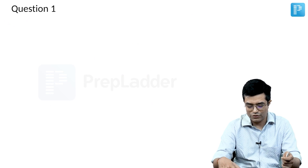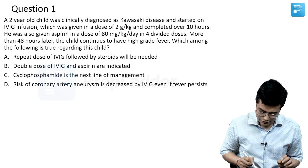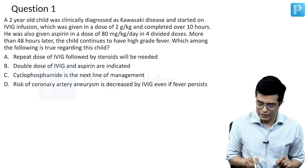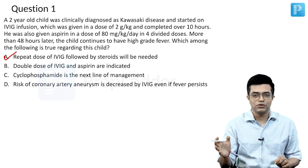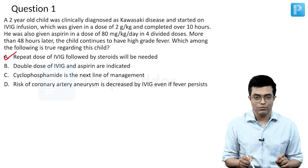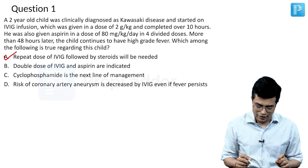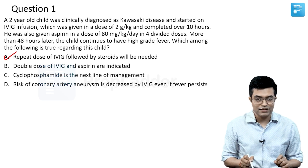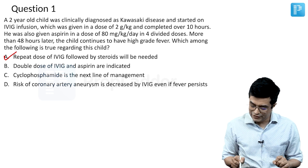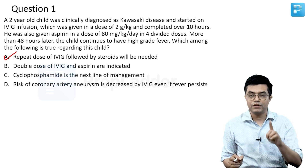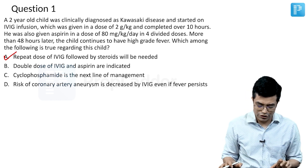Going back to the question: the answer is A — repeating the dose of IVIG followed by steroids will be needed. Option B is wrong because doubling the dose of IVIG and aspirin is not indicated; we are already giving high-dose aspirin. Option C is wrong because cyclophosphamide is not effective in Kawasaki disease. Option D is wrong because if fever persists, the disease remains active and the risk of coronary artery aneurysm is not decreased by IVIG alone. The answer is A.